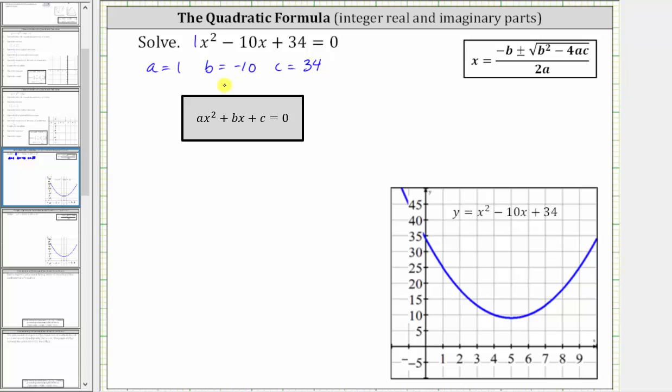And now I'll perform substitution into the quadratic formula. We have x equals, in the numerator we have negative b, which is negative and then negative 10, plus or minus the square root